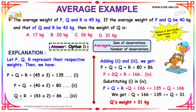The value of Q is obtained by subtracting 135 from 166, which equals 31. So Q's weight is 31 kg, which is option D. Hence, our answer is option D.